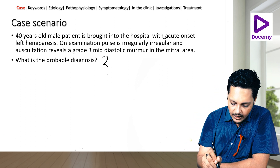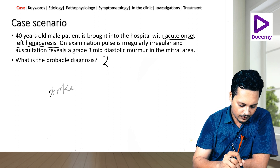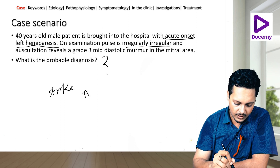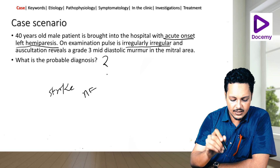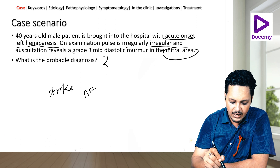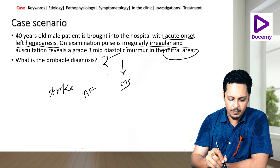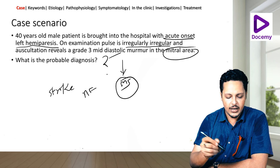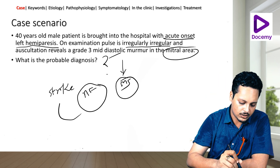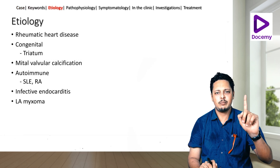Let us analyze this question. Acute onset left hemiparesis is just a fancy term for stroke. The patient's pulse is irregularly irregular, which is pathognomonic of atrial fibrillation. There is a grade 3 mid-diastolic murmur in the mitral area — if there is a diastolic murmur in the mitral area, it is always MS. So this patient had MS complicated by atrial fibrillation, wherein a left atrial thrombus embolized to cause a stroke.